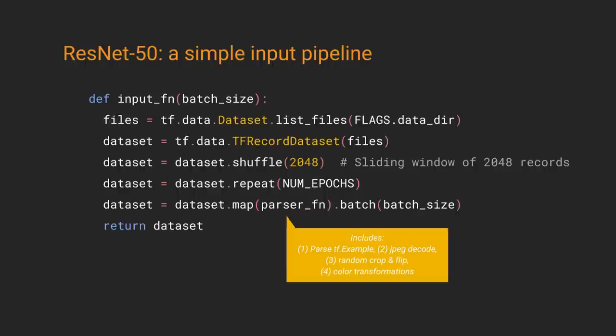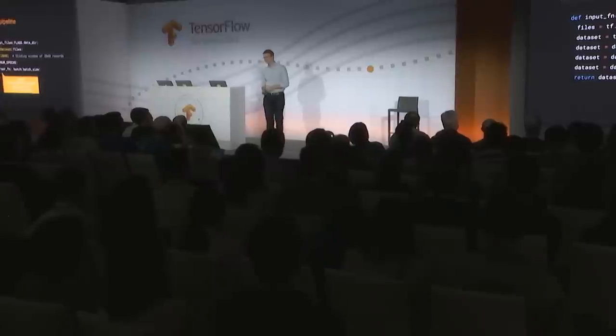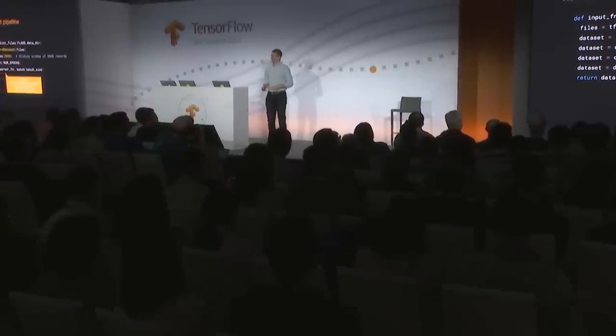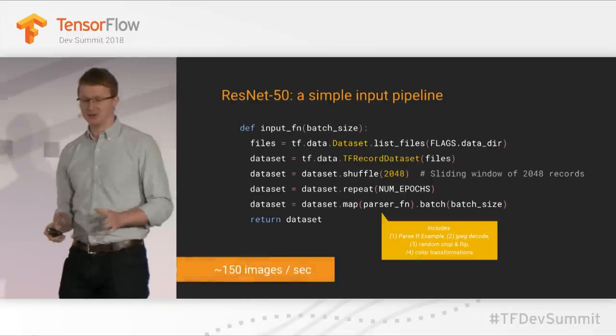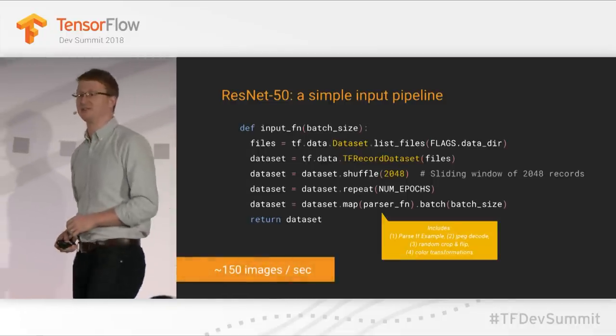You have your images batched together into tf.record files. You load them in with the TFRecordDataset, shuffle and repeat, run a parser function mapped across every input image — doing things like parsing tf.Examples, JPEG decoding, color transformations, and augmentations — then batch it up and return your dataset. If you run this on a fancy Cloud TPU, a modern accelerator, you're actually only going to get about 150 images a second.